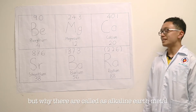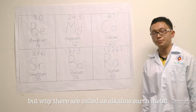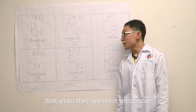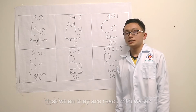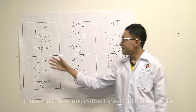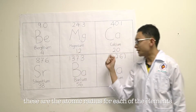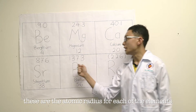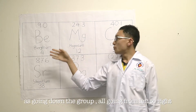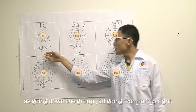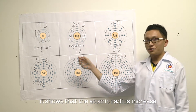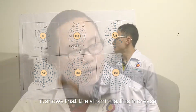But why are they called alkaline earth metals? When they react with water, they form a solution. These are the atomic radii for each of the elements. Going down the group, the atomic radius increases.